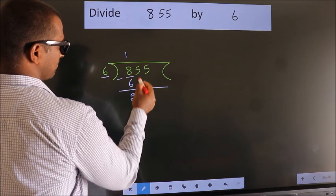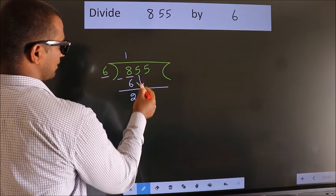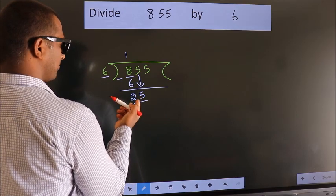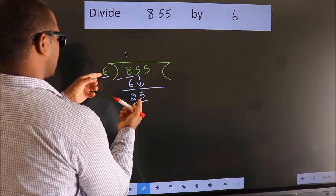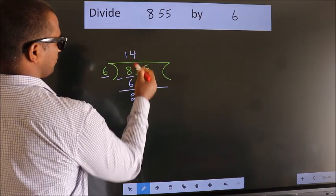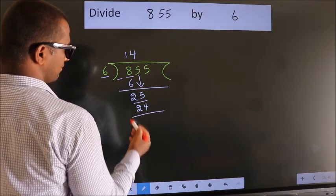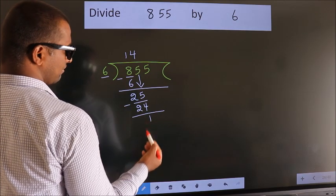After this, bring down the beside number. So, 5 down. So, 25. A number close to 25 in the 6 table is 6 fours, 24. Now we subtract. We get 1.